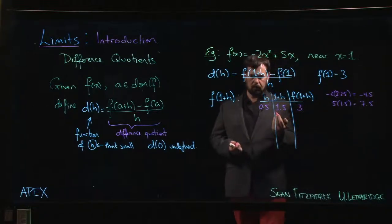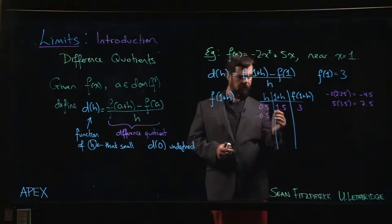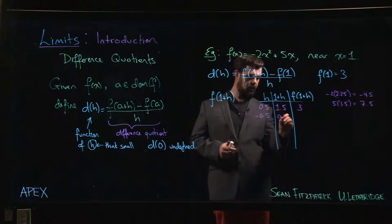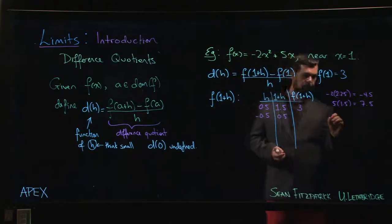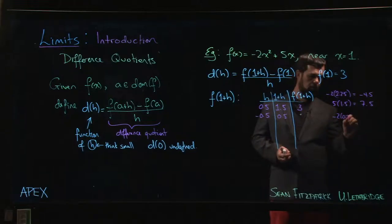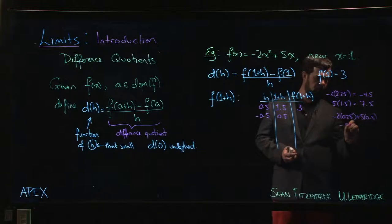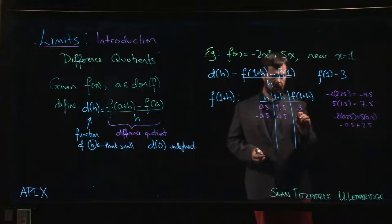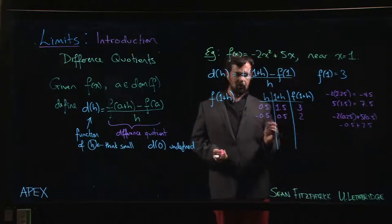We could do -0.5. So then 1+h would be at 0.5. So now we're going to do, let's see, -2 times 0.25 plus 5 times 0.5. So this is going to be -0.5 plus 2.5, so there I have a 2.